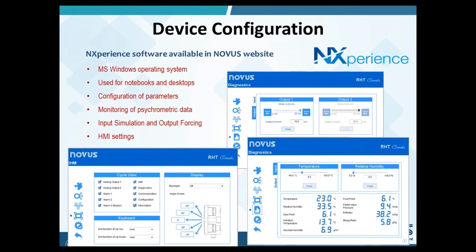The configuration of RHT Climate is an easy task. Novus offers a free Windows software available for download on our website called NaxExperience, which can be used on notebooks or desktops. It is a powerful tool for the technician commissioning the device in the field. All features needed for these activities are available in the software: configuration of all parameters, monitoring of all psychometric data, simulation of temperature and humidity, forcing output transmission signal, and settings for the HMI display. Here are some example screens from NaxExperience.